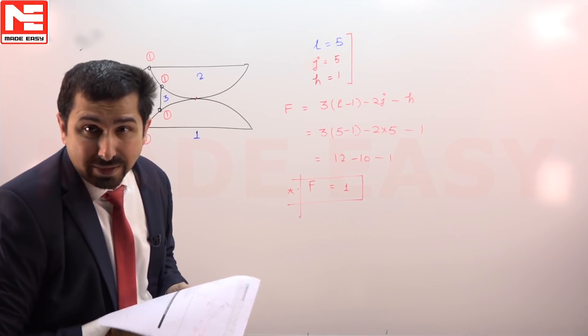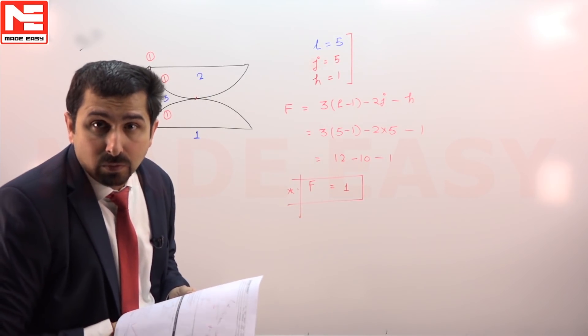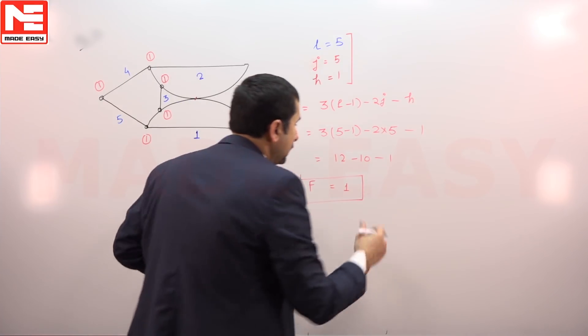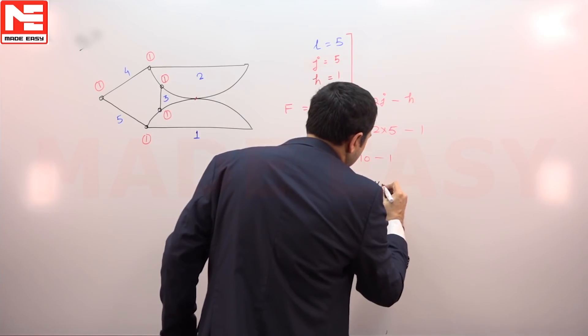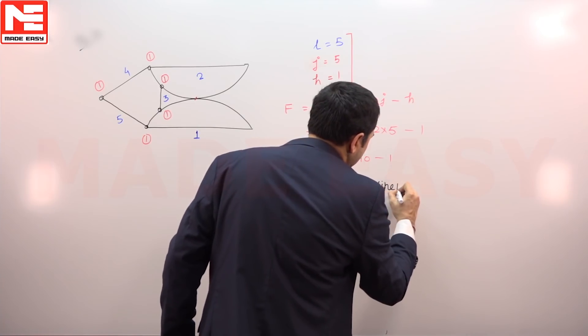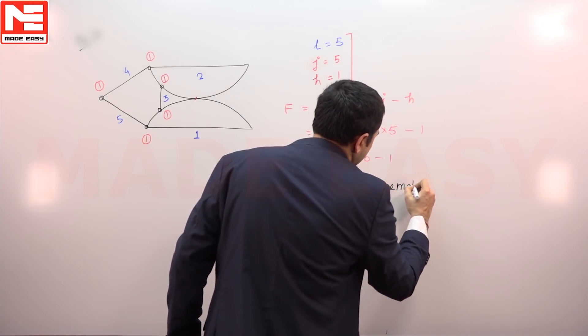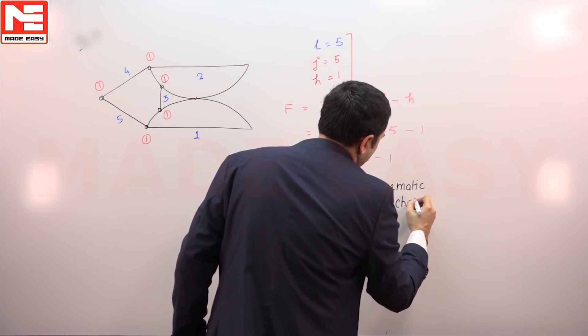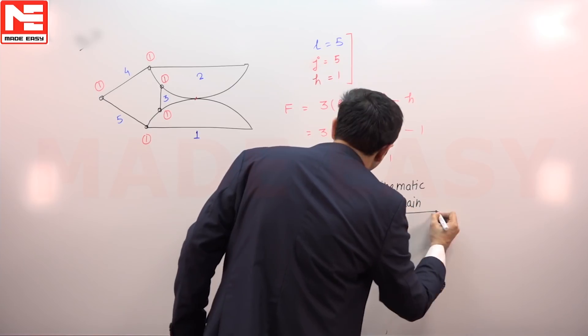So the degrees of freedom for this mechanism is 1. This means it is a constrained kinematic chain — if the degrees of freedom is 1, it is indeed a kinematic chain. The right answer is 1.